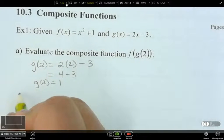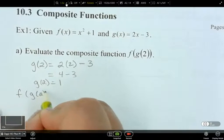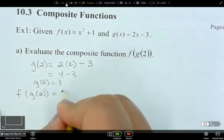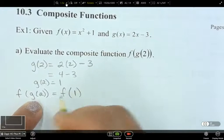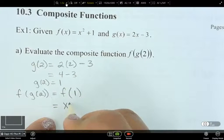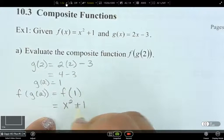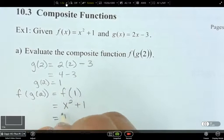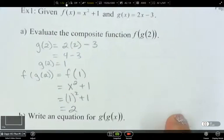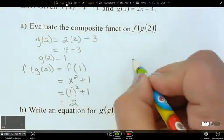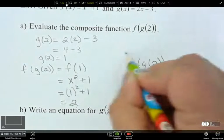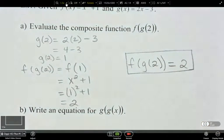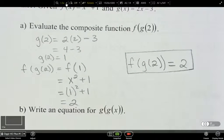But we're not done. So now, we need to figure out what f of g of 2 is. Since g of 2 is 1, I can replace this g of 2 part by a 1. And then I can figure out what? x squared plus 1, replace this x by a 1. 1 squared plus 1, so it equals 2. So I'll just write that out over here.